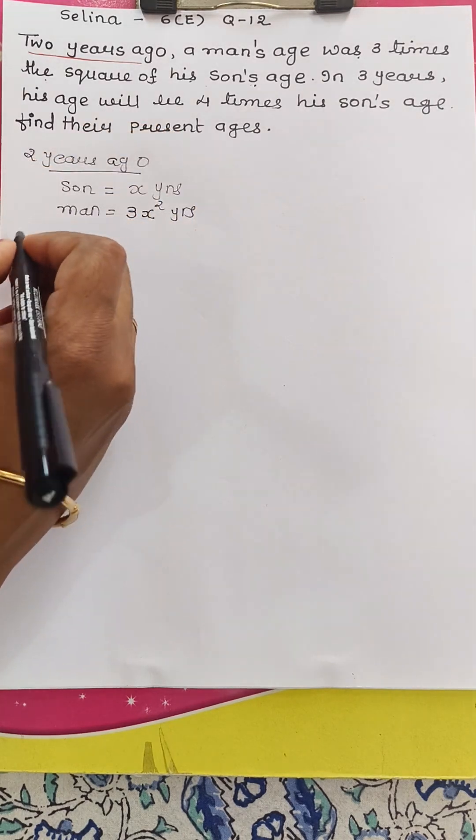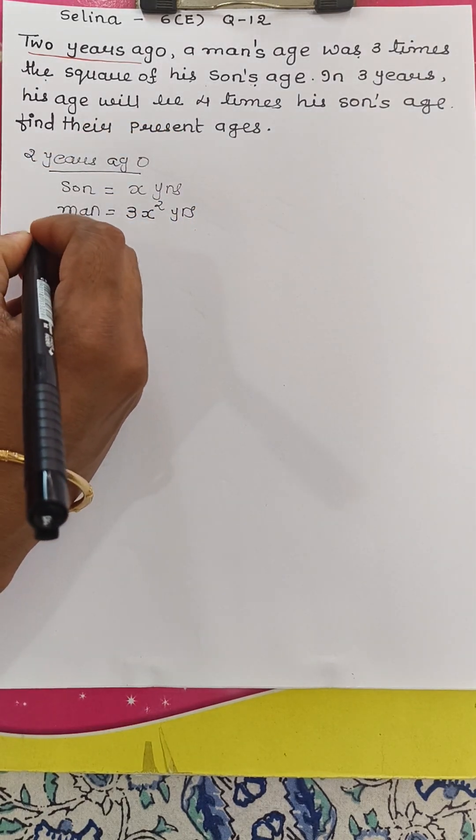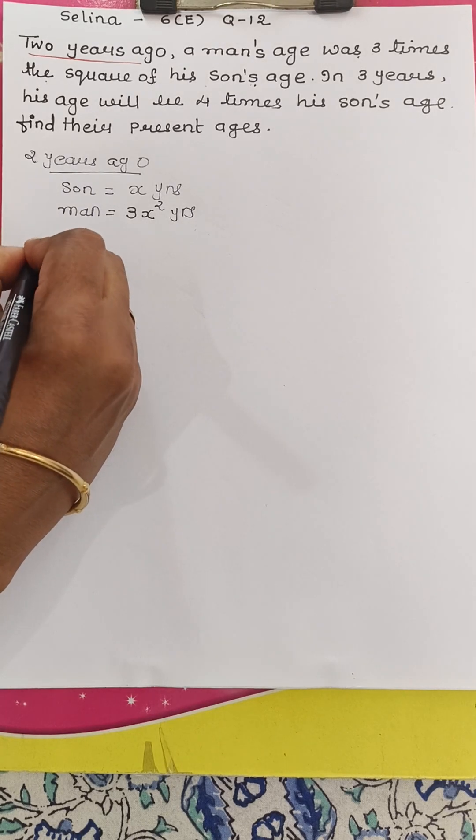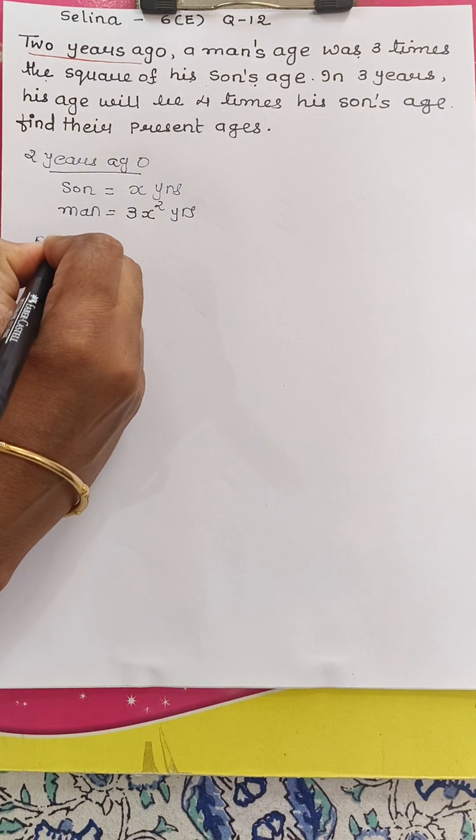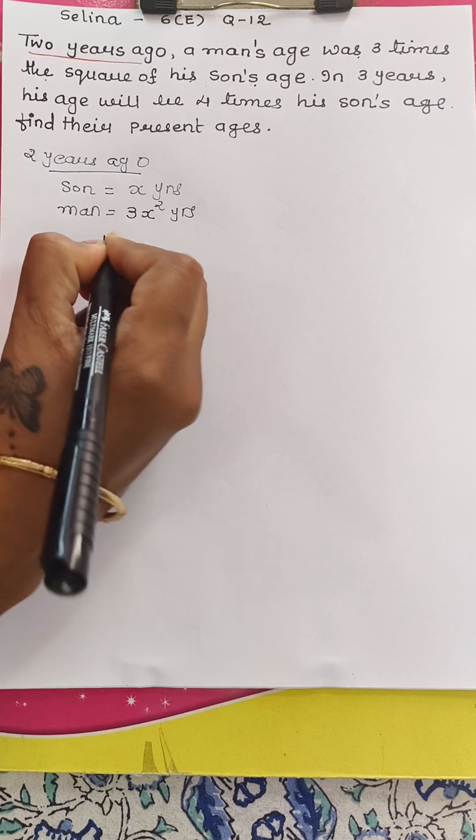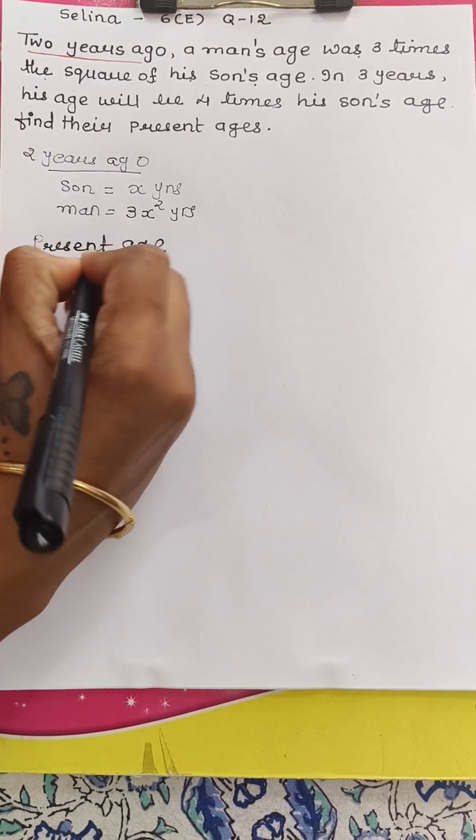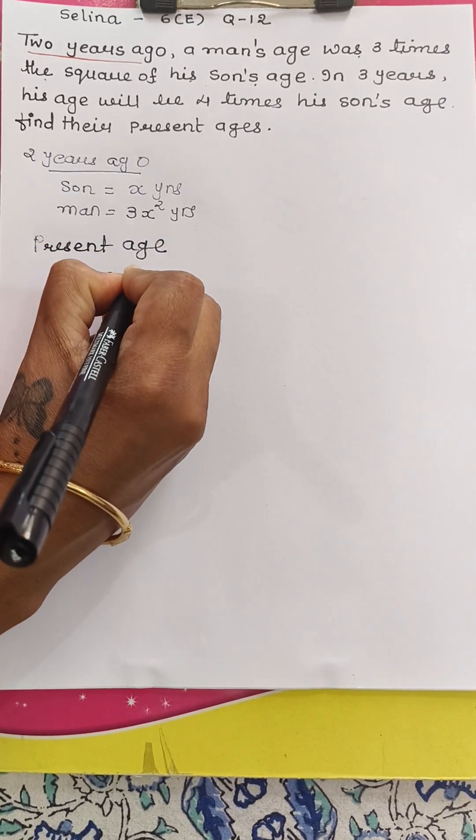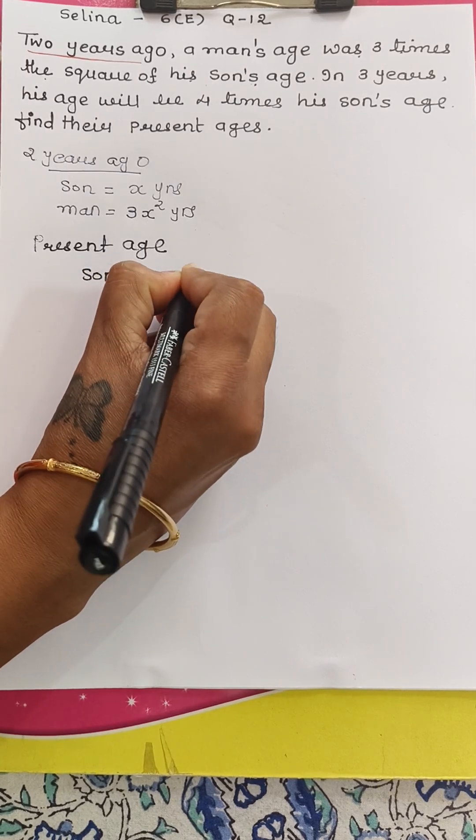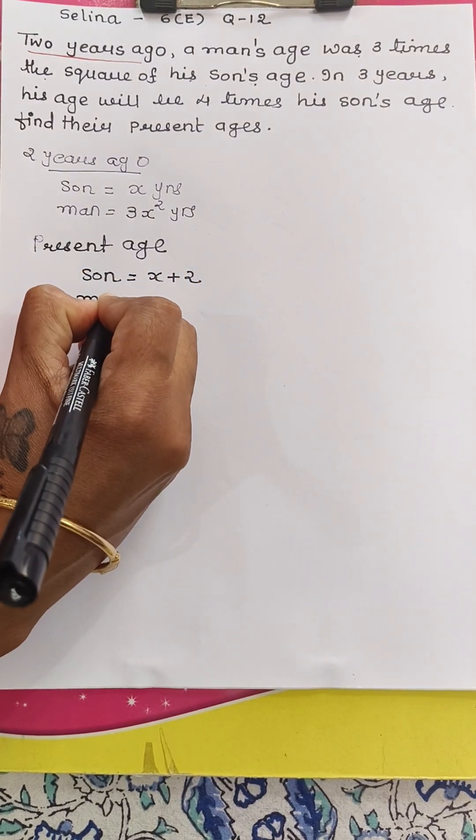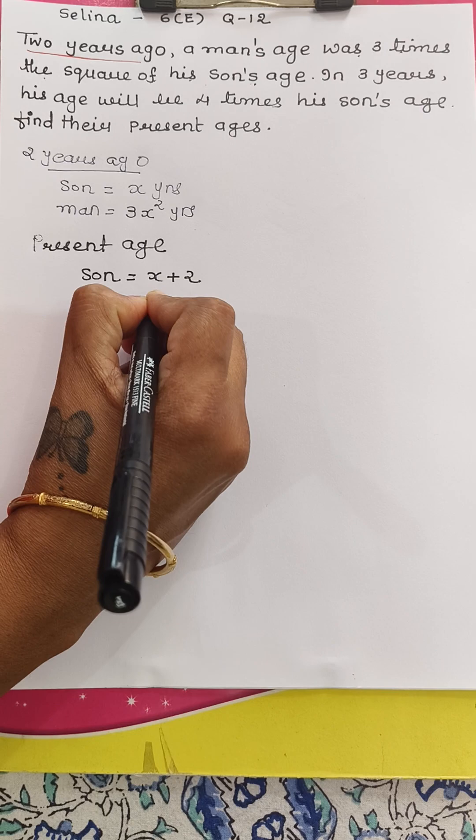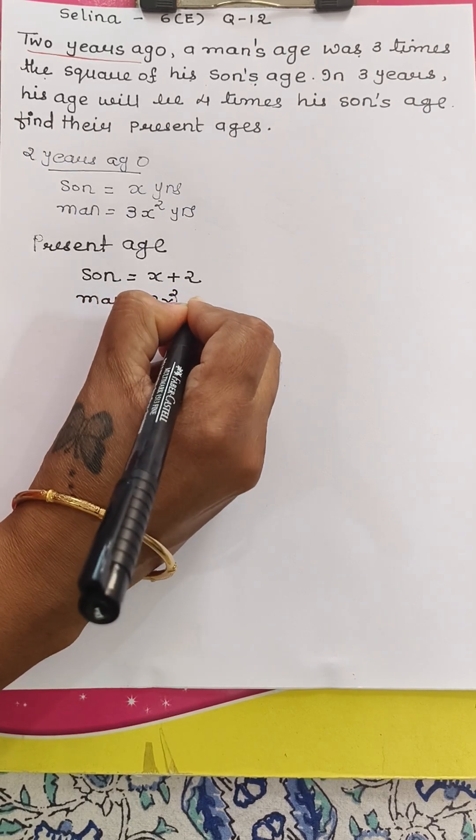Now we have to come to the present age. What will be the present age of son and man? So present age of son will be X plus 2 and man will be 3X square plus 2.